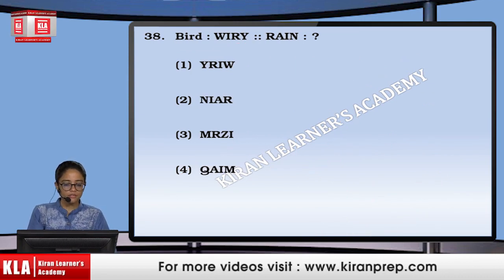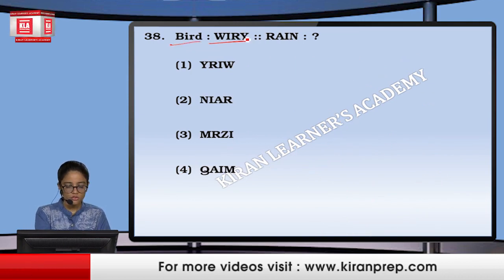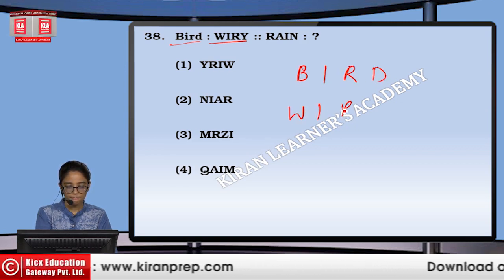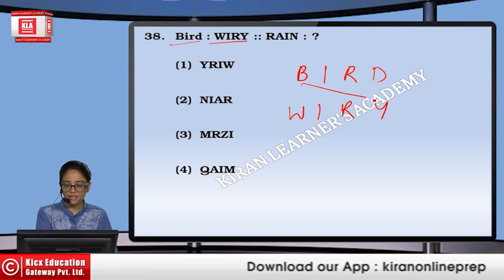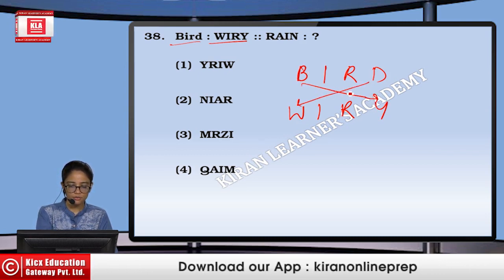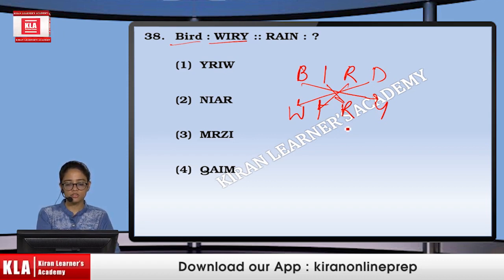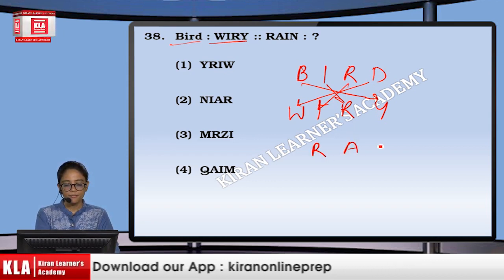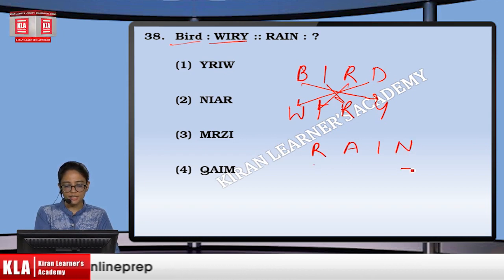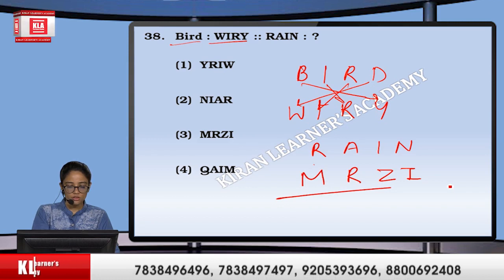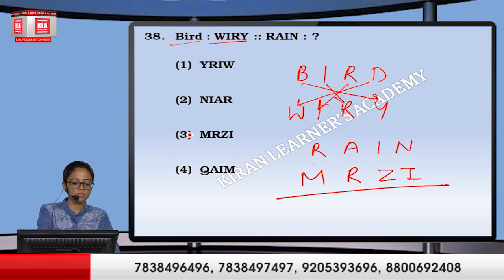Next, BIRD is coded as WIRY and RAIN. For BIRD: B with Y is opposite, R with W, I with R, R with I — we are using opposites but in reverse order. Similarly, for RAIN: R with I, A with Z, I with R, N with M. So this becomes option number 3.